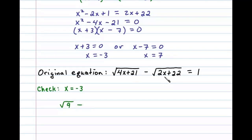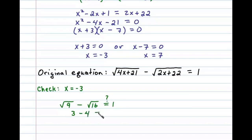So we have the square root of 9 minus the square root of 16, since 2 times negative 3 is negative 6 and negative 6 plus 22 is 16. The question is: does that equal 1? Well, 3 minus 4 certainly does not equal 1, so that doesn't give us a true statement. Negative 3 is an extraneous solution — we'll disregard that answer.